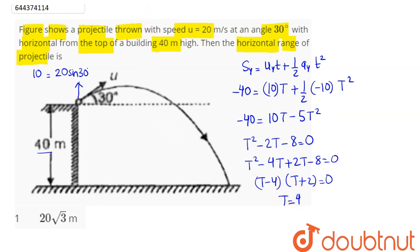Now coming to the range of the projectile, displacement along x direction is the range, which equals ut plus half a t square. Acceleration in x direction is 0, and time is the time of flight which is 4 seconds. X component of initial velocity is 20